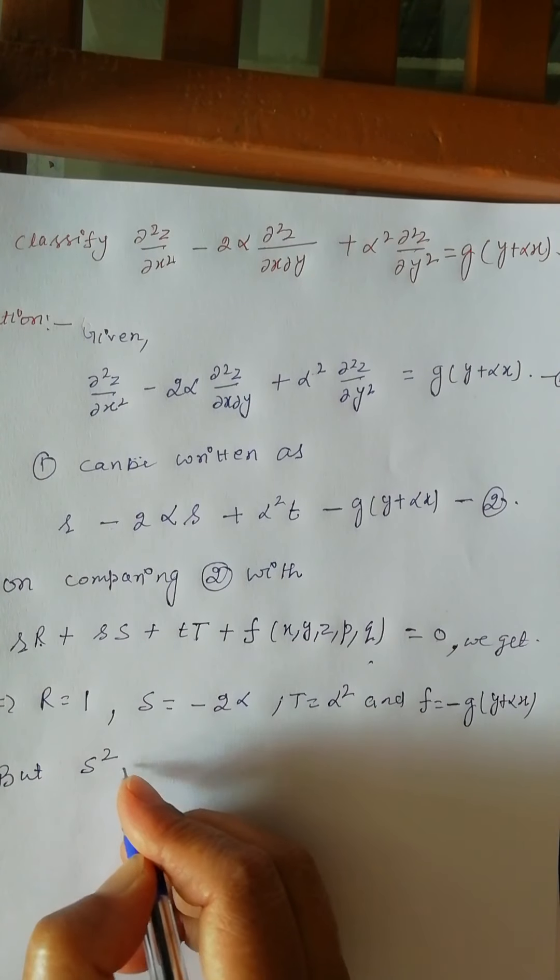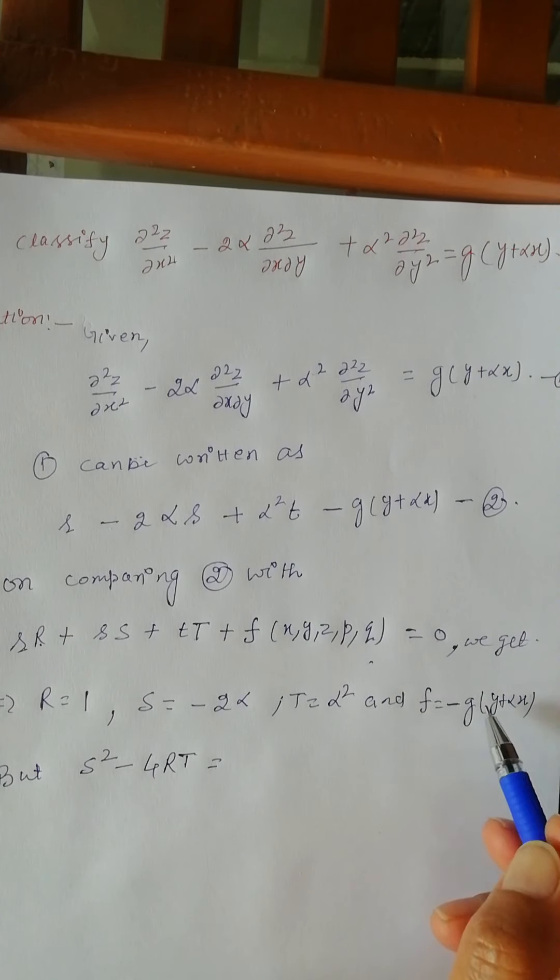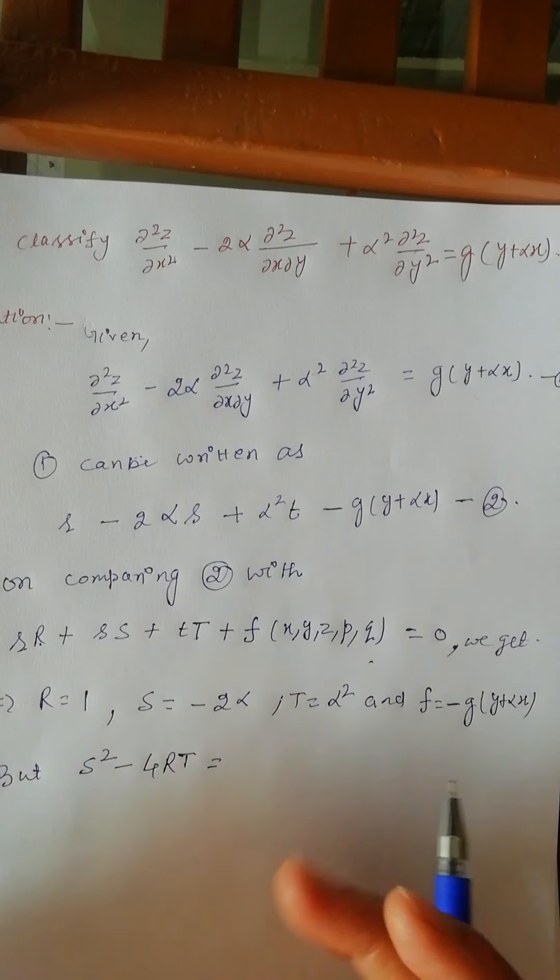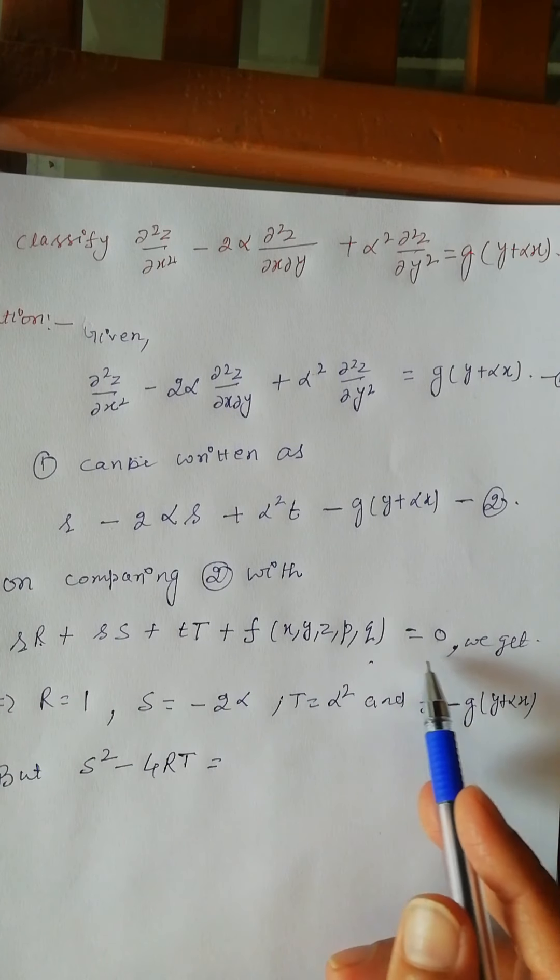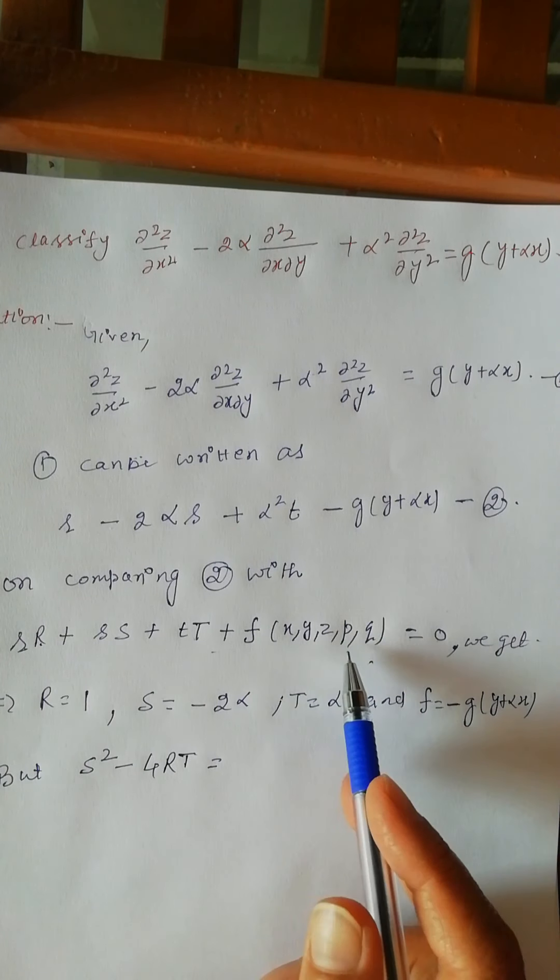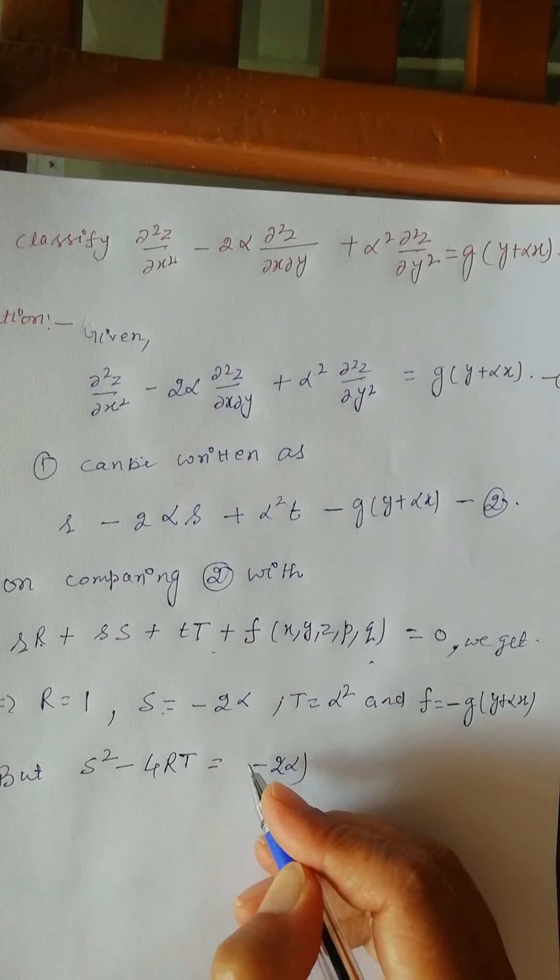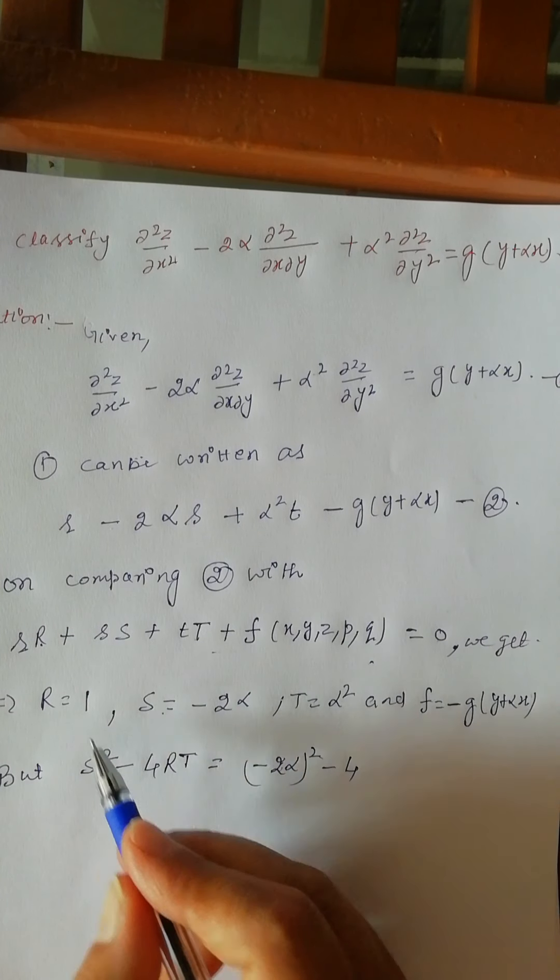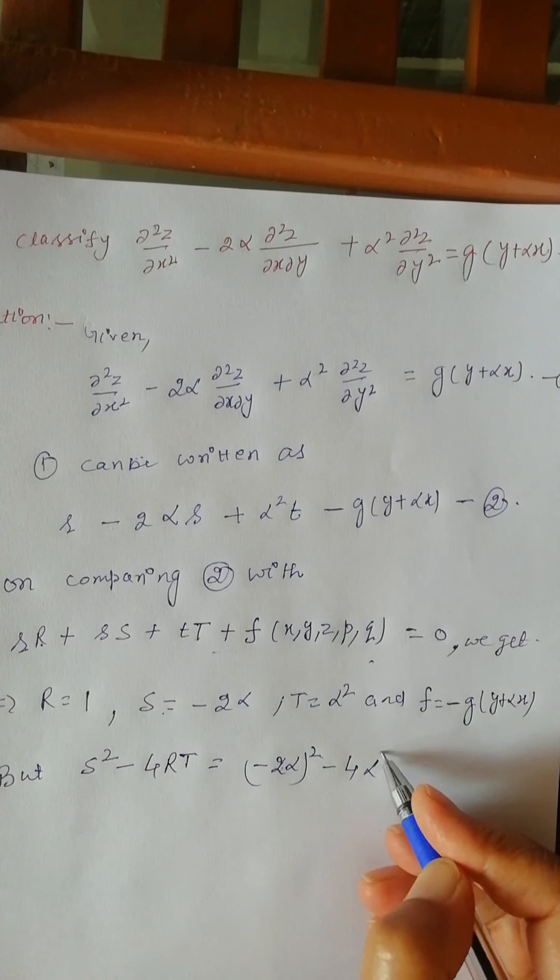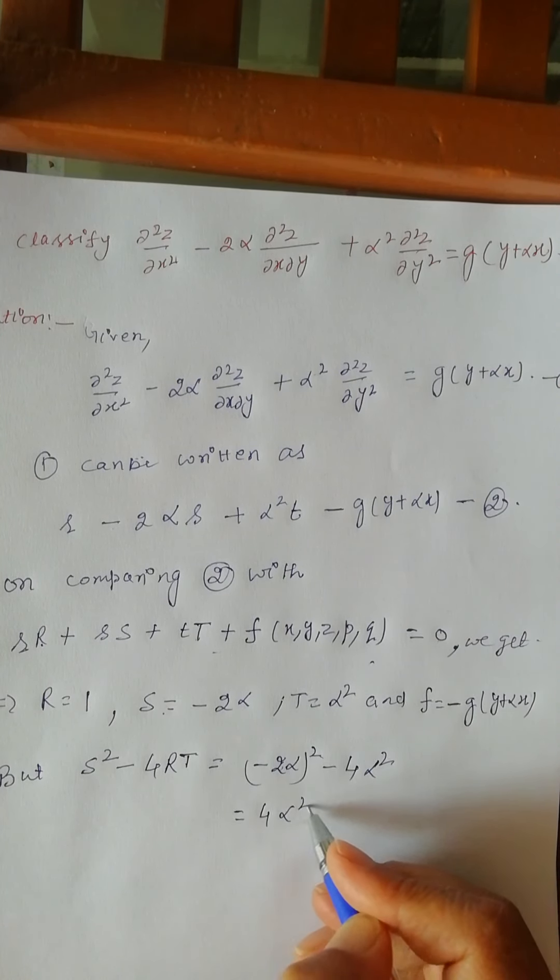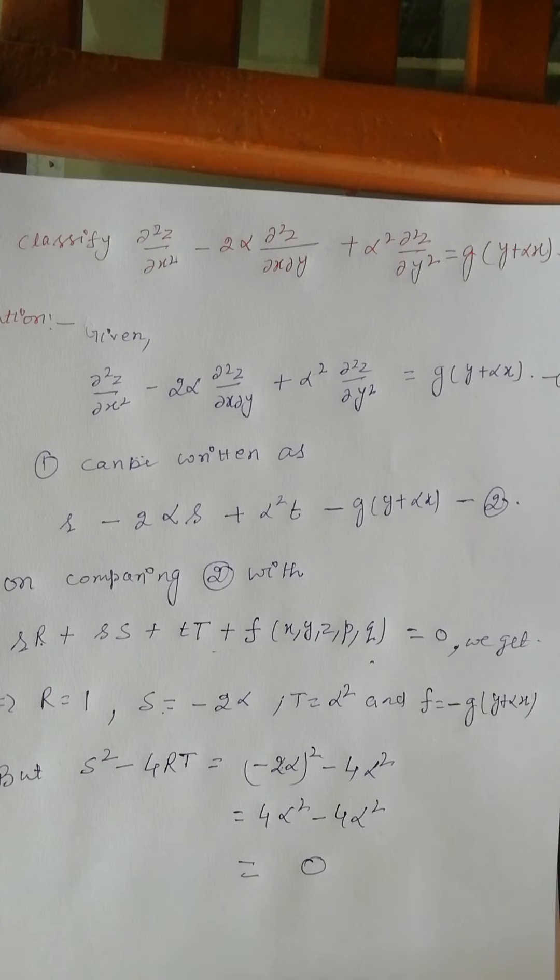Now S² - 4RT is equal to here? For classification we have to find this S² - 4RT. This is (-2α)² - 4 times R is 1 and T is α². Or it is equal to 4α² - 4α², which is equal to 0.